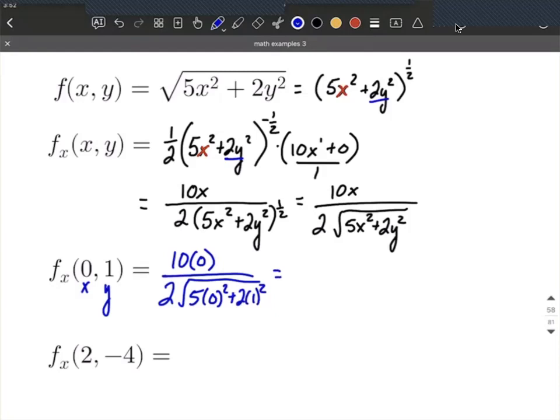With a little simplifying, 10 times 0 makes 0 in our numerator, and we have 2 times the square root of 5(0) + 2(1) = 2. So we have 0 over 2√2. With a little simplifying, this all equals 0, since 0 divided by any non-zero number is 0.